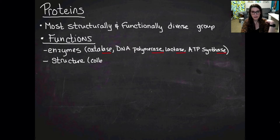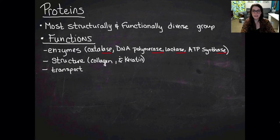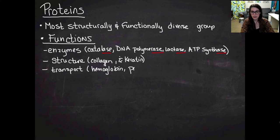They're also structural, so like collagen and keratin are structural proteins. They are used for transportation. So hemoglobin is a protein in your red blood cells that moves oxygen, and you have protein channels in your cell membranes that move things in and out of your cells.